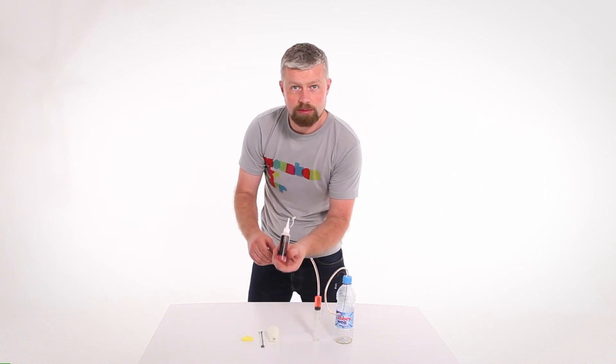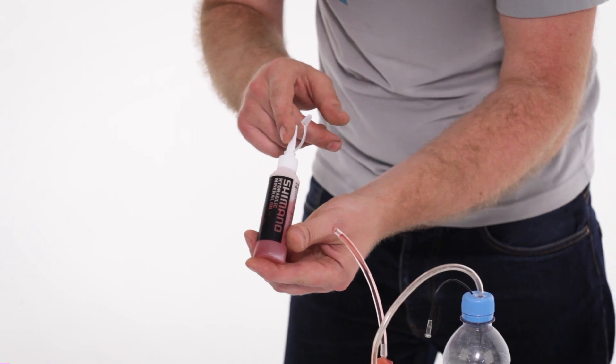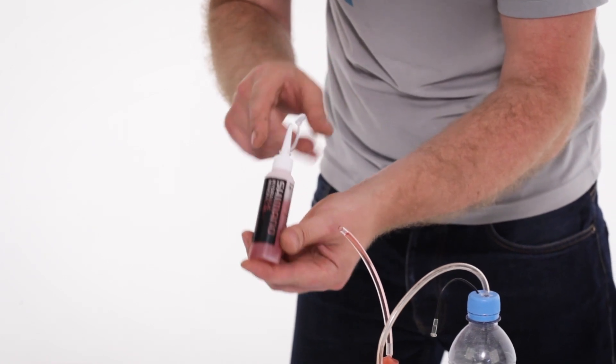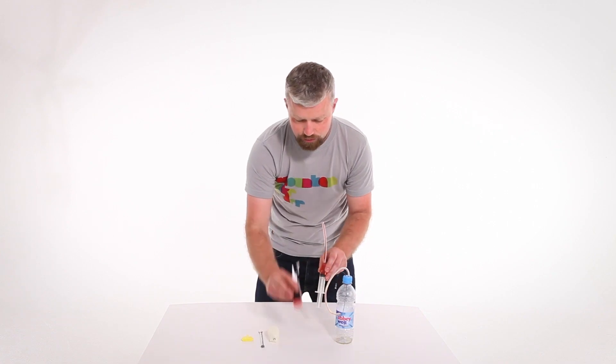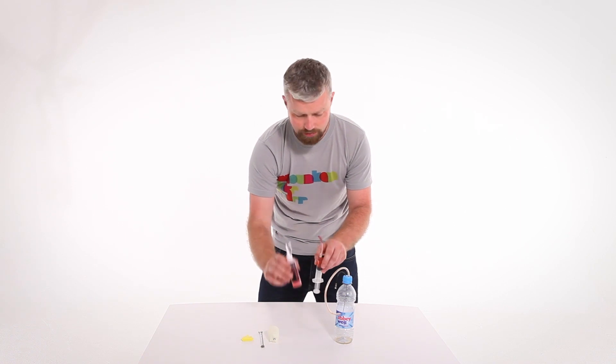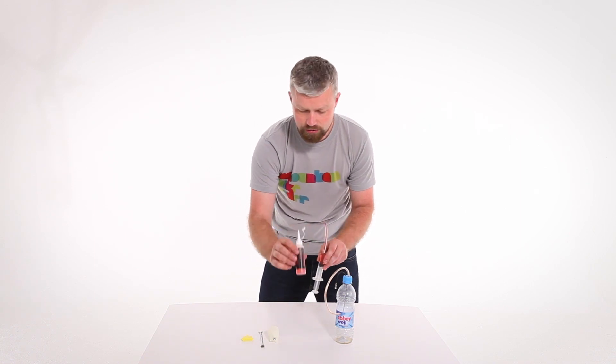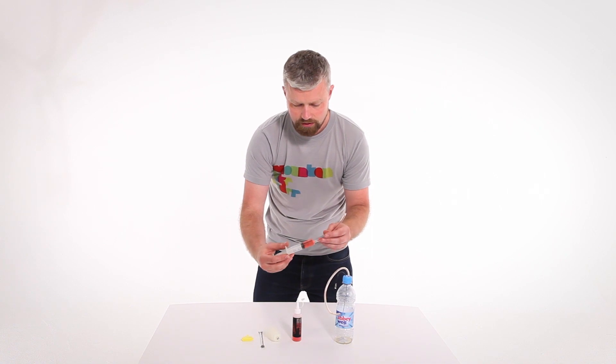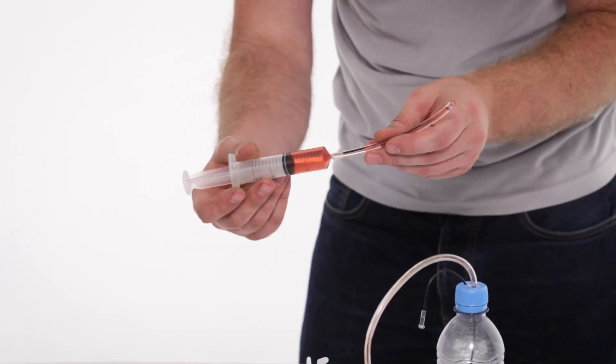You'll need your mineral oil. Best to get the proper Shimano stuff. And whilst you can use this with a bit of hose to do the bleeding, it's much easier to do it with a proper syringe like this.